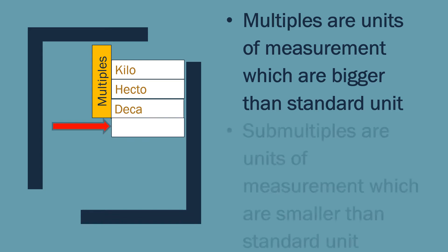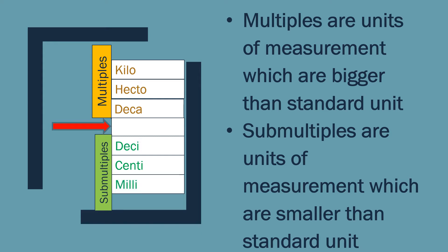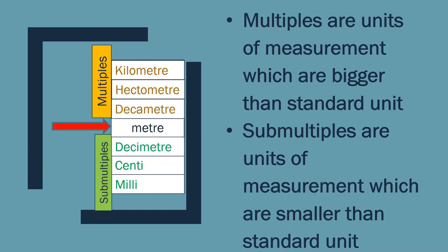Then there is the standard unit itself, and submultiples are smaller — like deci, meaning one tenth; centi, meaning one hundredth; and milli, meaning one thousandth. So for units of length, the standard unit is meter. The multiples are decameter, hectometer, and kilometer; and the submultiples are decimeter, centimeter, and millimeter. These are all units of length.